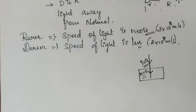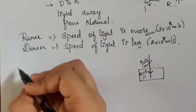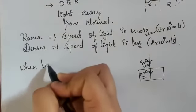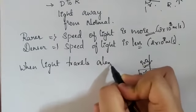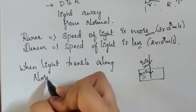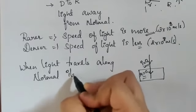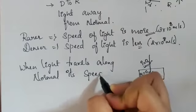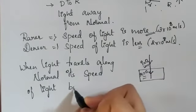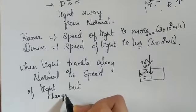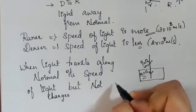Why? Because when light travels along the normal, its speed changes—the speed of light changes but not the direction.